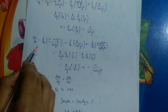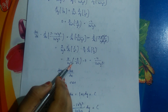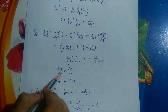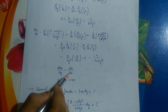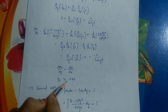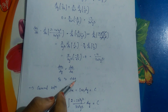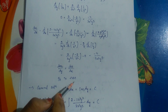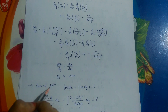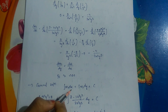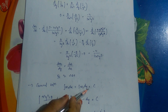Since ∂M1/∂y = ∂N1/∂x = -4/(3x³y³), the equation is now an exact differential equation. The general solution is: ∫M1 dx + ∫N1 dy = c, where in the second integral we only include terms in N1 not containing x.